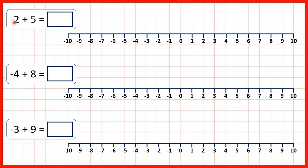So first we have minus 2 plus 5. On a number line we can start at minus 2, and then count 1, 2, 3, 4, 5, and that takes us to 3.